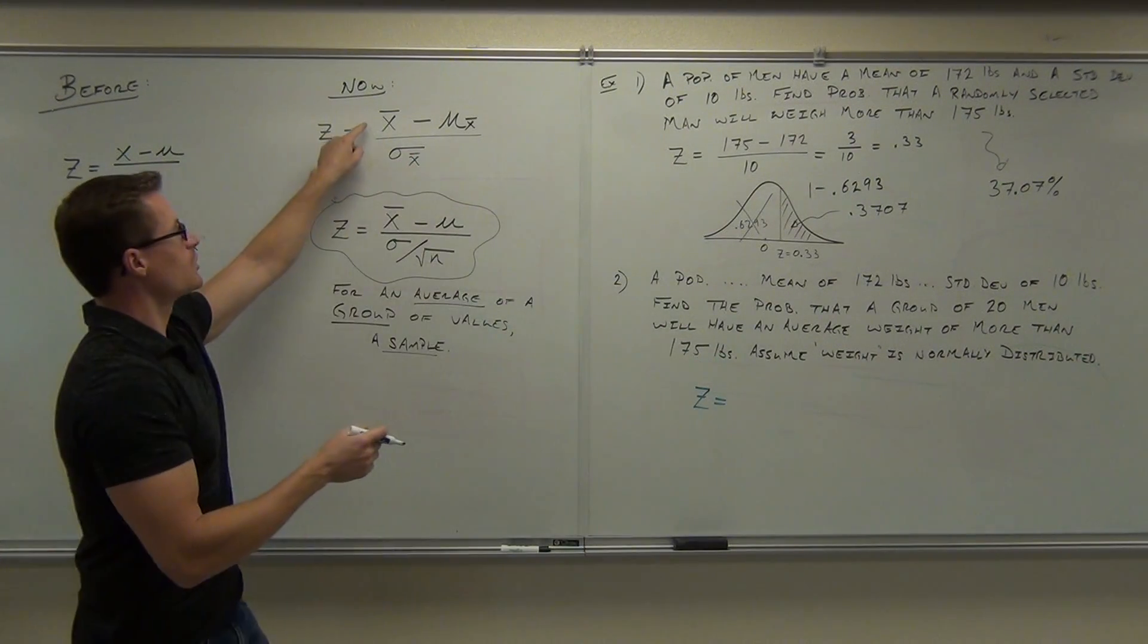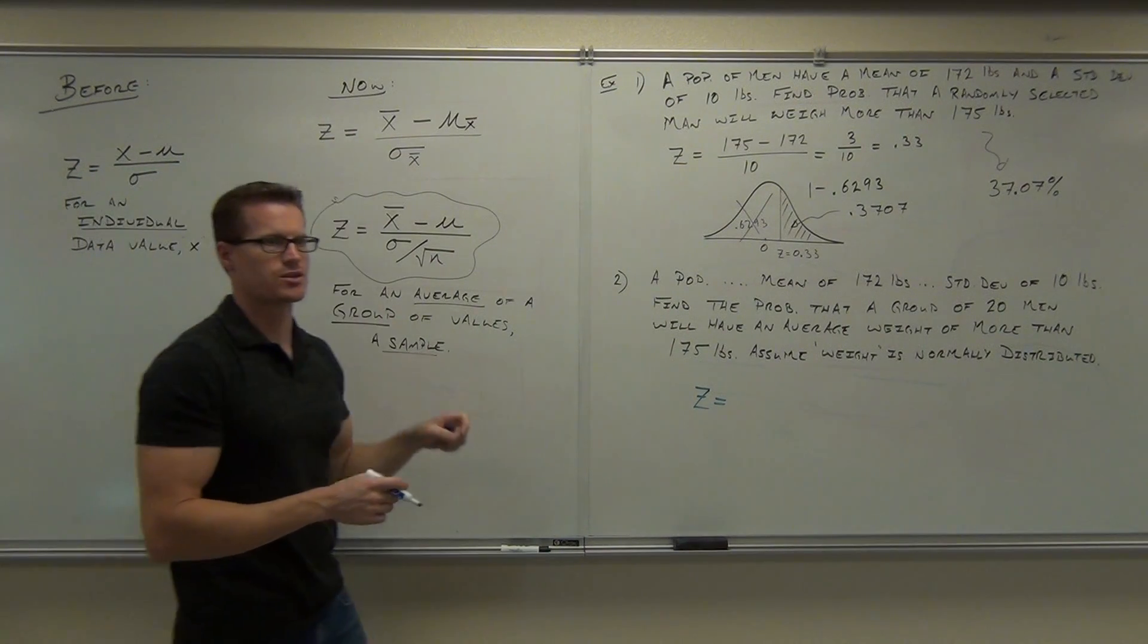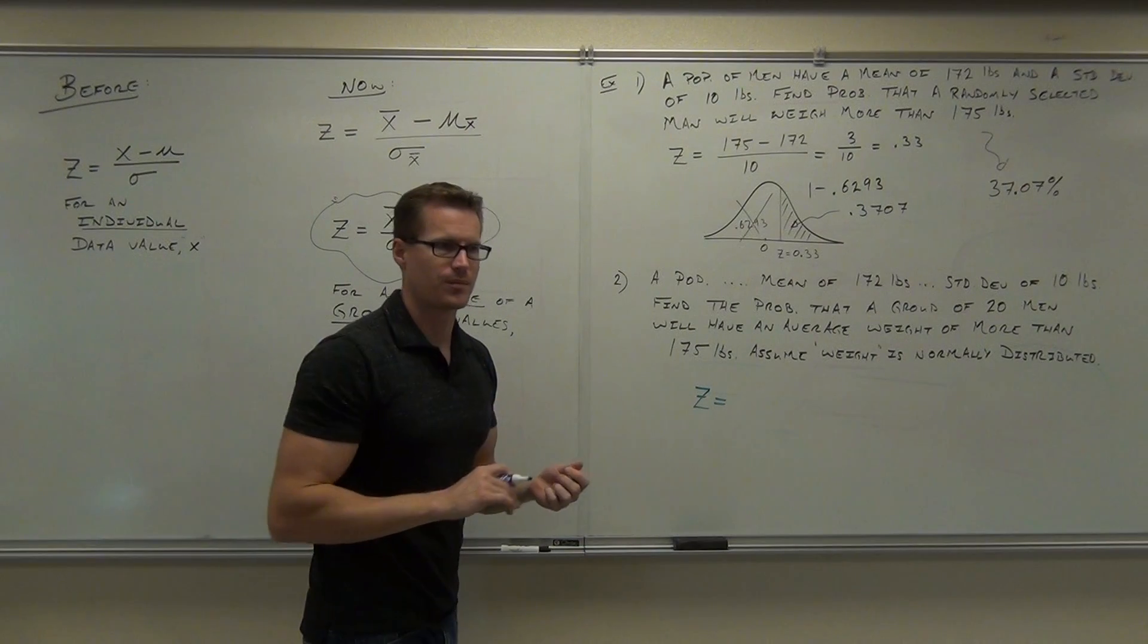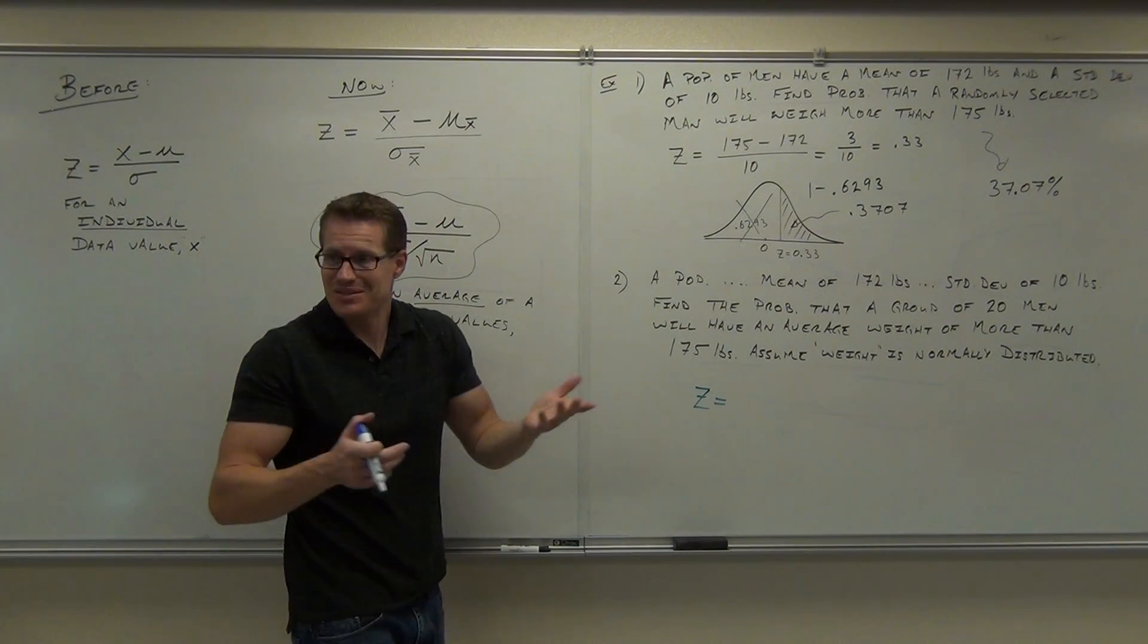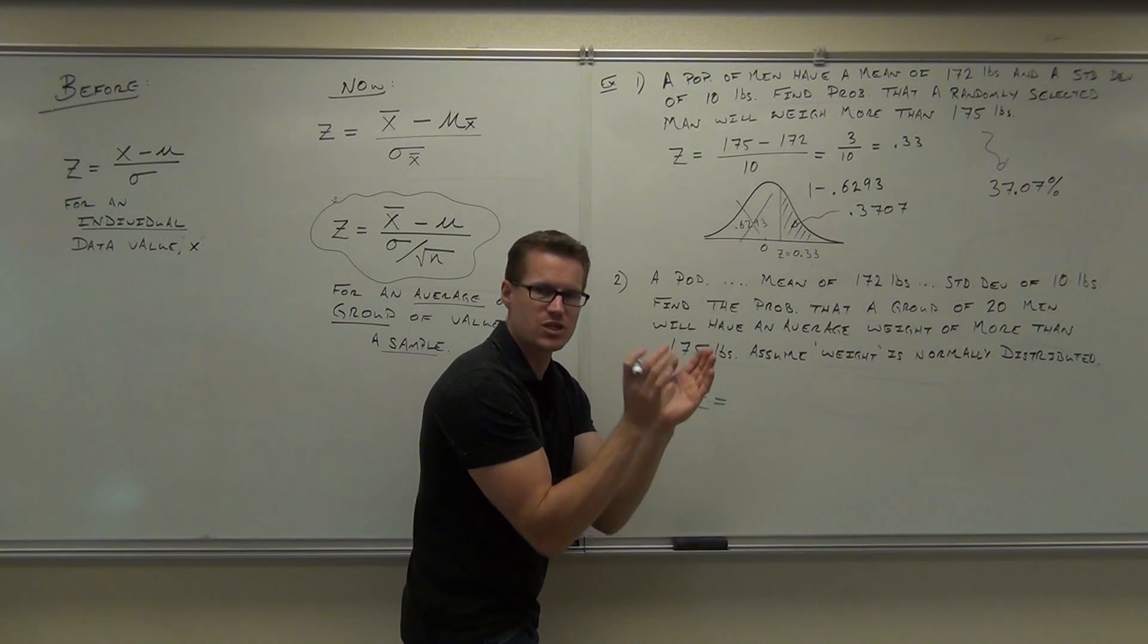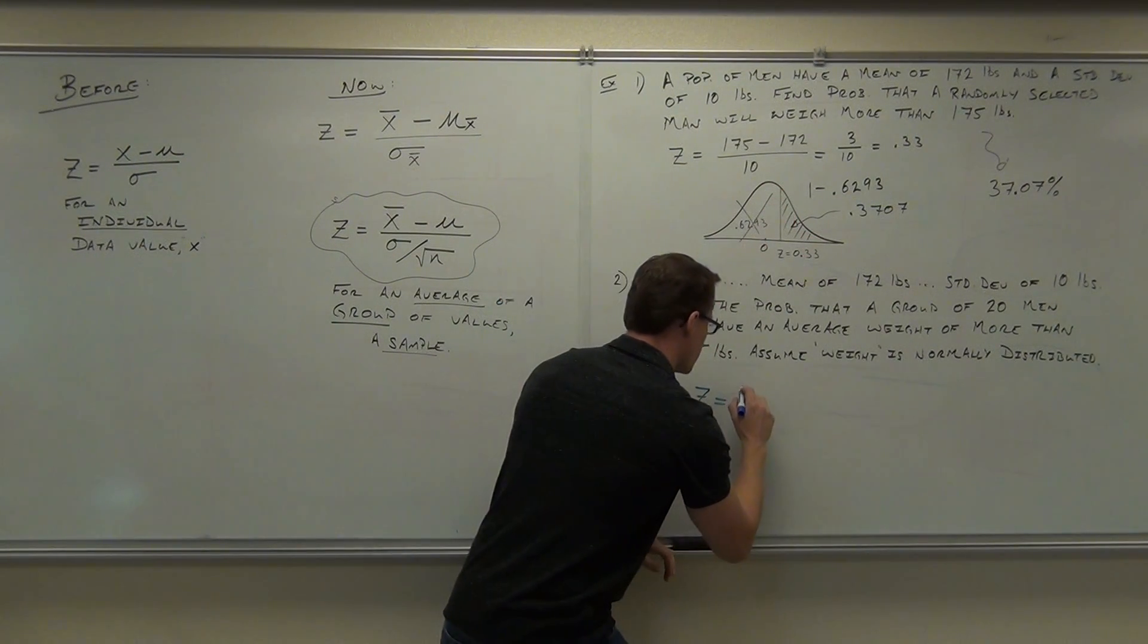An individual will be much more spread out. A group, this is going to be comparing this average with all other possible averages. So we take a z-score. We're working with an average, so what's the average we're checking? What's our average here for the sample? 175. We're not dealing with 175 as an individual's weight. We're dealing with the average of a group of 20 people's weight.